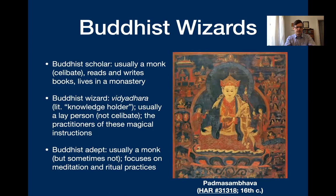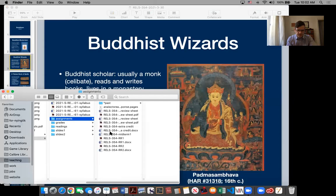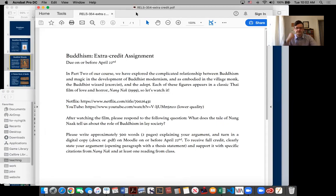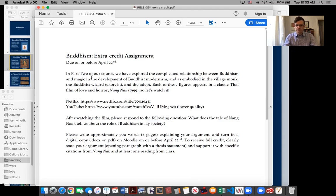One thing that will be important for class going forward, and especially for the extra credit — maybe now is a good time to look at that with you. Extra credit is basically: watch this movie, write a little paper, do a little analysis. But one thing I bring up here is we've got the village monk, we've got the Buddhist wizard, and we've got the adept. These figures show up in Nang Nak. At the beginning they're not so important — it's mostly just lay people. Do you remember the word lay people? That was on the first exam. For our purposes, it just refers to anyone who's not a monk or a nun.